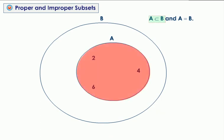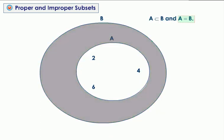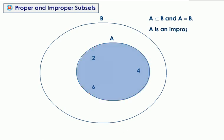If A is a subset of B and A equals B, then A is an improper subset, and we denote it by A is an improper subset of B.